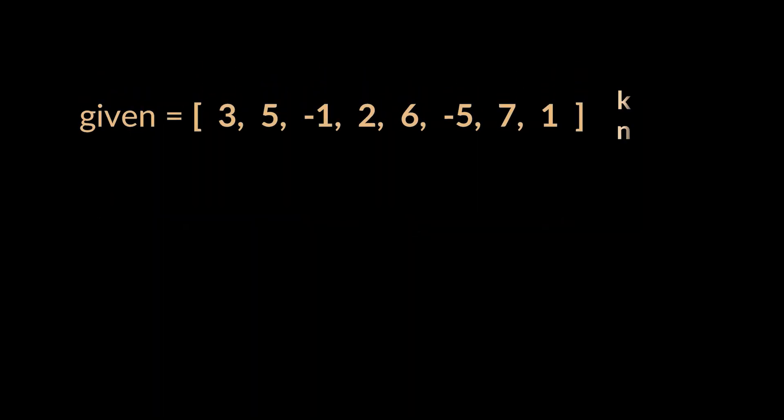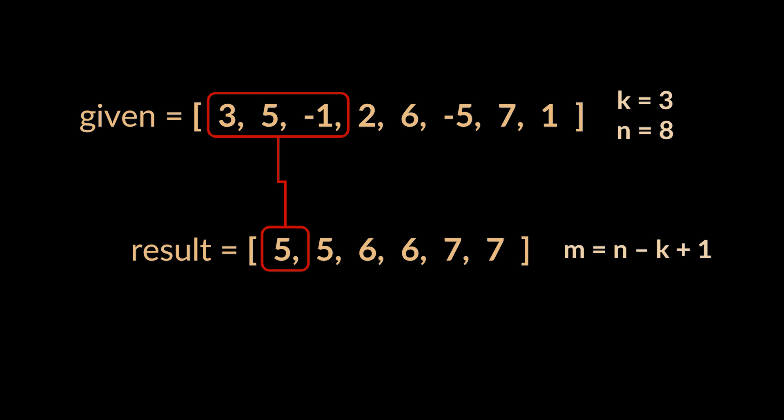To visualize this, take the following array as an example alongside a window of size 3. The maximum value among the first three elements is 5. Hence the value 5 is stored in the first slot of the resulting array. Same applies to the next three values and the following ones up until we traverse the whole array with the sliding window.